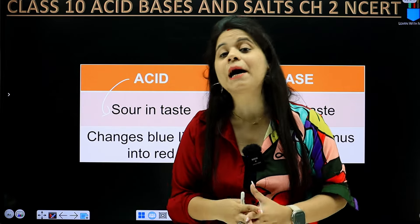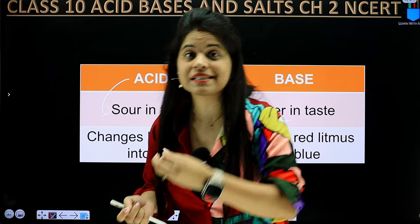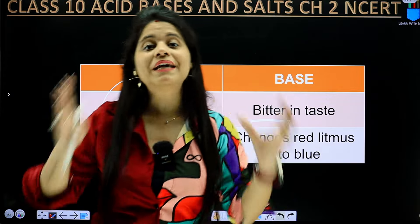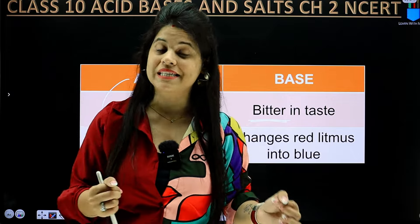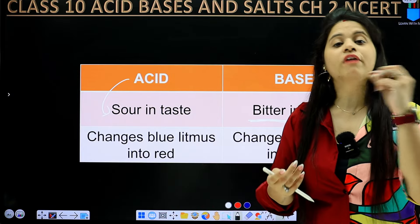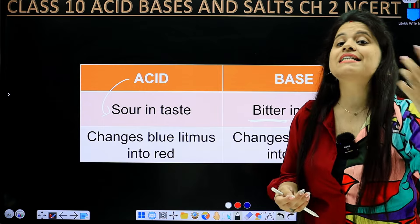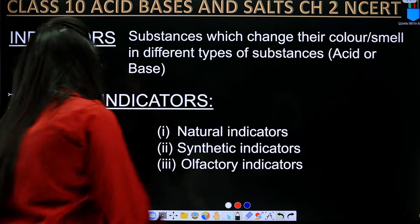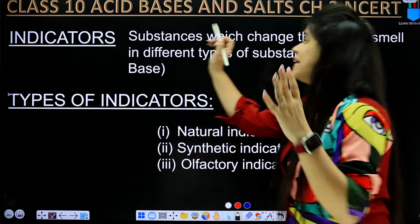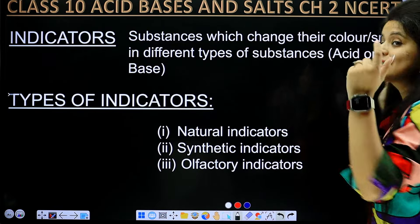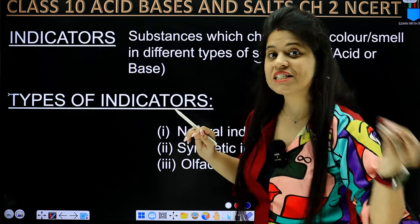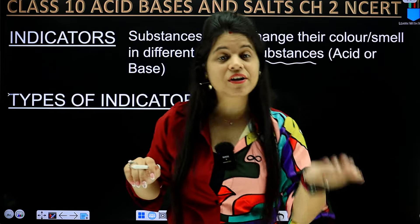But the fact is, acid can be very strong. So how do you judge whether a solution is acid or base? You can't just check if it's sour or bitter — that's not possible. So how do you judge a solution as acid or base? We have indicators. Litmus paper is one indicator, but there are also many other indicators which we will study. So let's look at the first definition: a substance which changes its color or smell in the presence of different types of substances — meaning acid or base — is called an indicator.